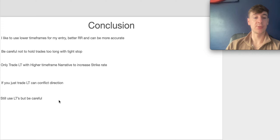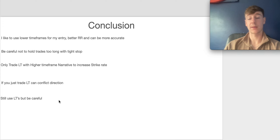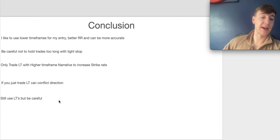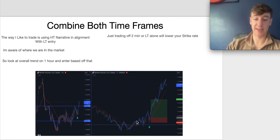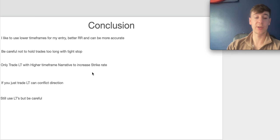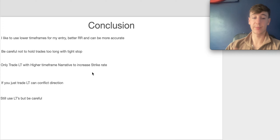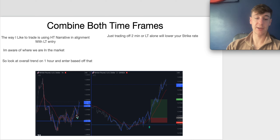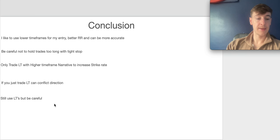To conclude: I like to use the lower timeframe for entry because it gives better risk/reward and more accurate entries. However, be careful not to hold trades too long — there have been many times I'd enter, it would go up, then completely stop me out within 15-20 minutes. You've got to be careful not to push targets too far, because as quickly as you can be right, you can equally be wrong. Only trade lower timeframes with a higher timeframe narrative to increase your strike rate. We're clearly in a bullish trend, so I'm looking for bullish momentum on the two-minute or ten-minute — whatever timeframe you trade, use them in alignment.